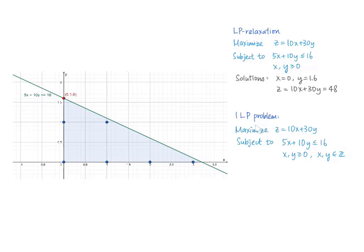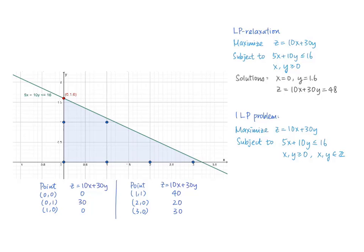For our ILP problem, the points that satisfy all constraints are (0,0), (0,1), (1,0), (1,1), (2,0), and (3,0). If we round down the vertex (0, 1.6) to the nearest integer, we will get (0, 1). However, by checking all the points, we find that (0, 1) is not giving the greatest optimal value. Instead, the point (3, 0) gives the greatest value for the objective function. So (3, 0) is the optimal point of the ILP problem, not the point (0, 1).